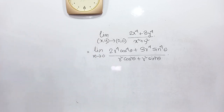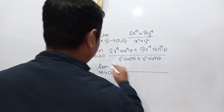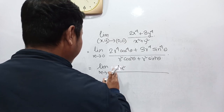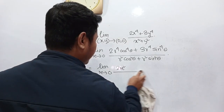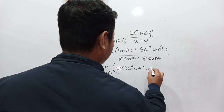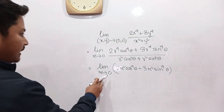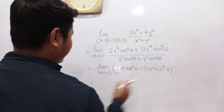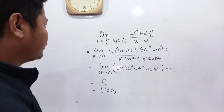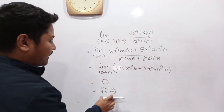Here r² cancels from numerator and denominator. Since cos²θ + sin²θ = 1, we get limit as r→0 of r²·(2cos⁴θ + 3sin⁴θ). As r→0, this gives zero times something, which is zero. That is nothing but f(0,0) by the definition of the function.